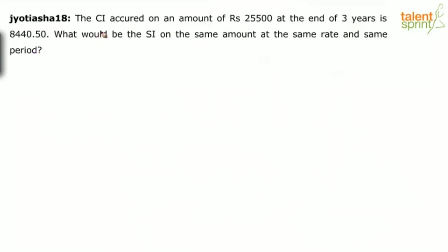As you see, the compound interest is given to us as 8,440.5, the principal is given as 25,500, and the time period is given as three years. Can you find out the rate of interest from these three values? Yes.